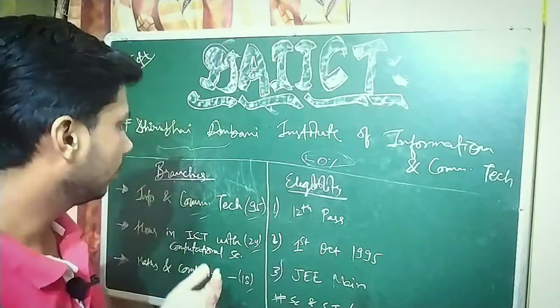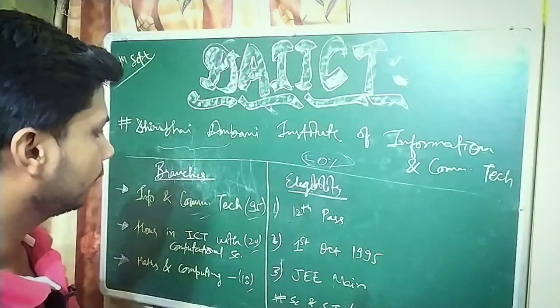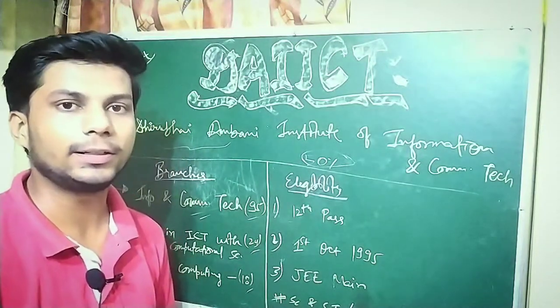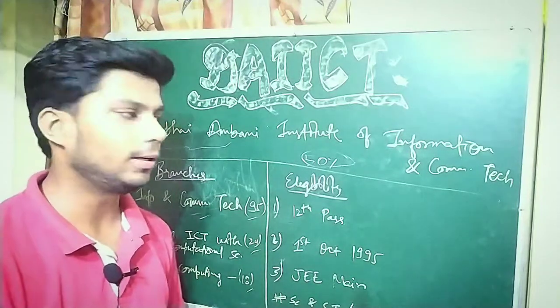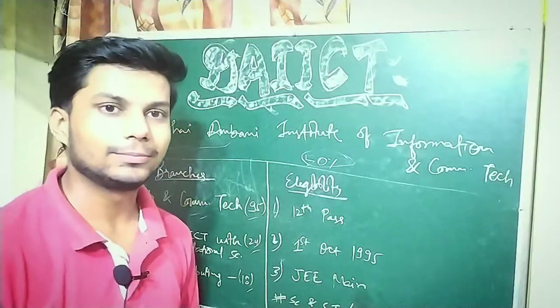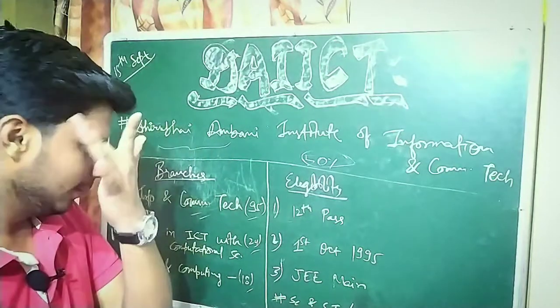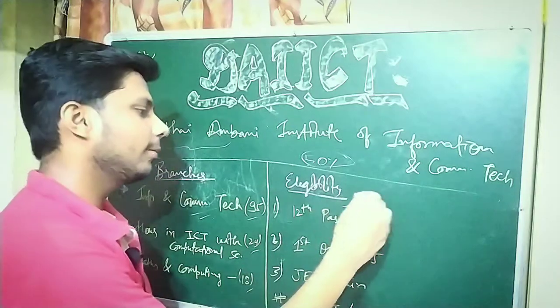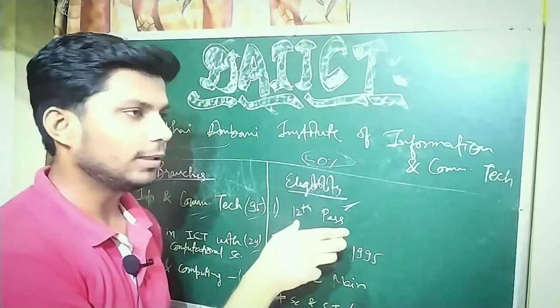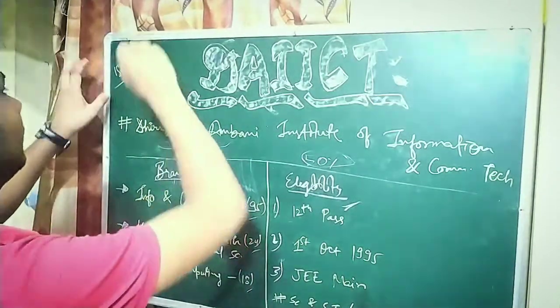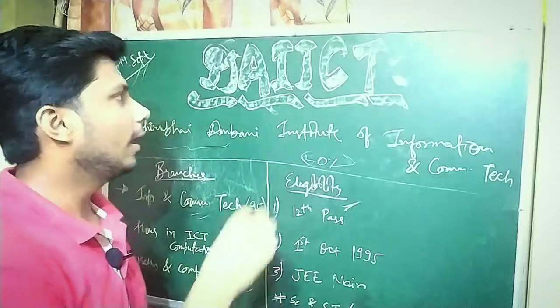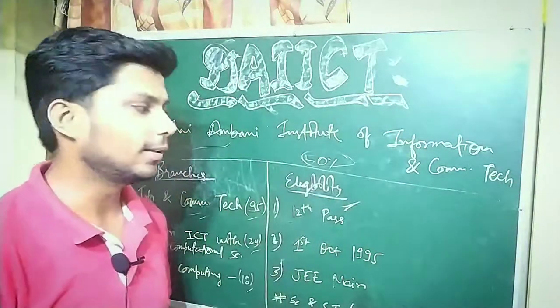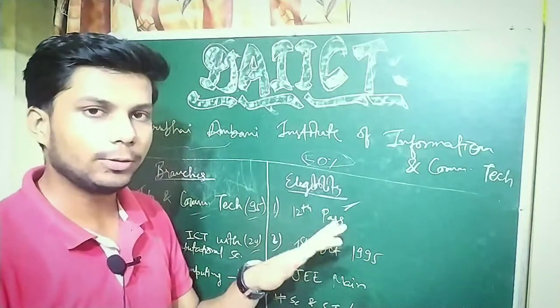So total seats are around 130 to 135 seats, with 60 to 65 seats for Gujarat and the rest for all India. There is a lot of competition here. Now let me talk about eligibility. The deadline is 15 September, which is the last date to fill the form. You can go to the DAIICT website to register. You must be 12th pass.